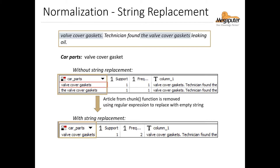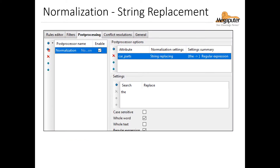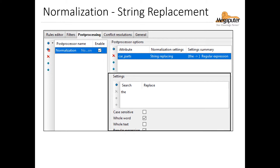With the string replacement post processor, we get our corrected result. The settings are similar to what we saw before. We choose string replacing in the normalization settings, then we check whole word and regular expression in the settings. We'd be able to use any regular expression we want depending on our needs. In this example, we just have it searching for the article 'the' and replacing it with nothing, which effectively removes the article if it appears in the output.